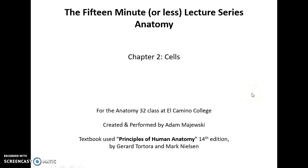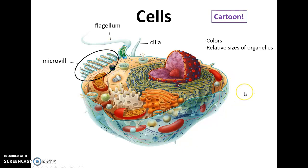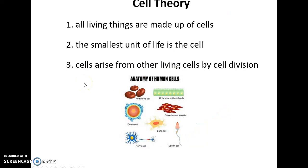Welcome to the 15 minutes or less lecture series, human anatomy, chapter two: cells. This is a cartoon of a cell showing structures like the flagellum and microvilli, which can be found on some cells. However, any cell will have either one of these or none of them. Cells make up all living things — they are the smallest unit of life and arise from other living cells by cell division.